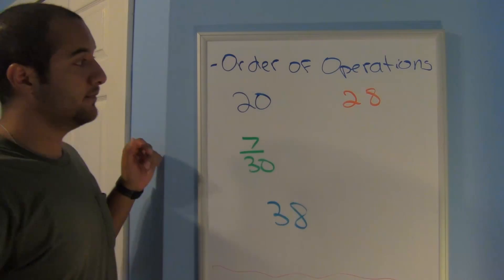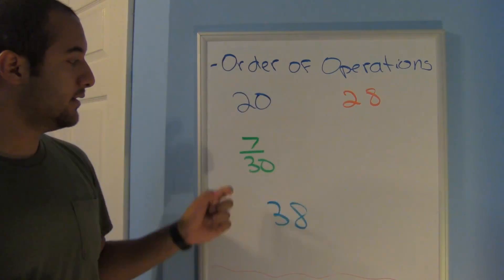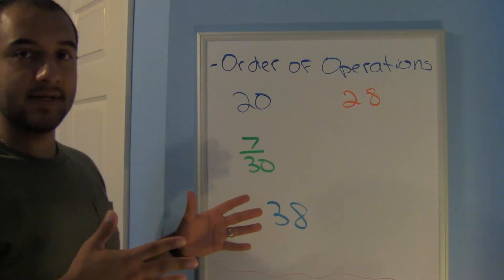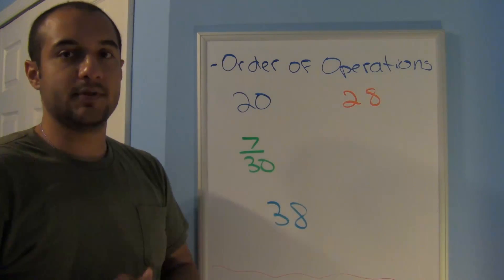Here are your answers. 20, 28, 7 over 30, and 38. Let me do one more set that has exponents and then we'll be done for today.